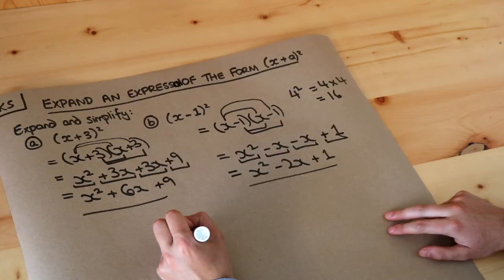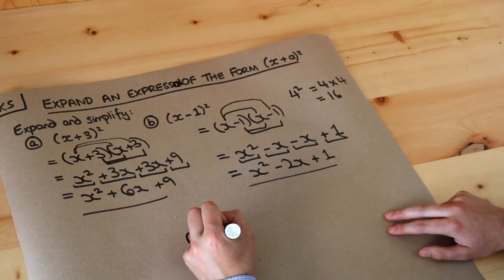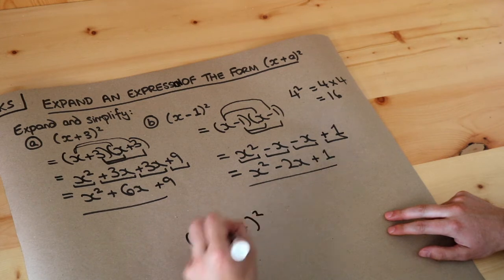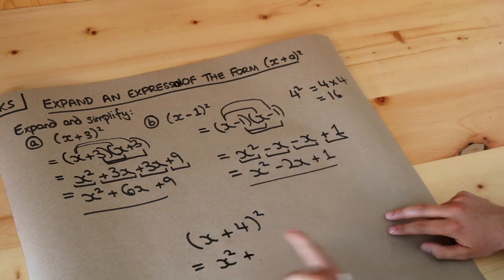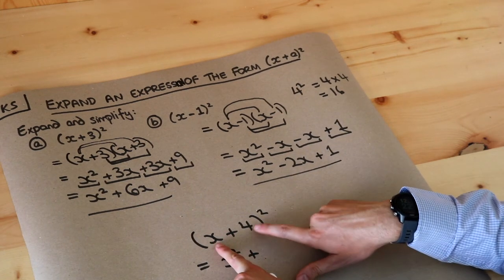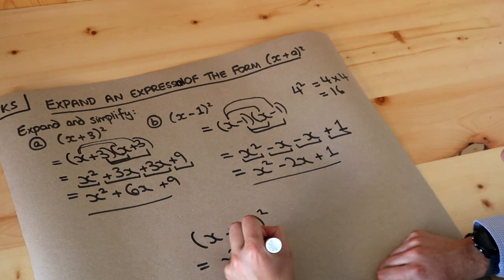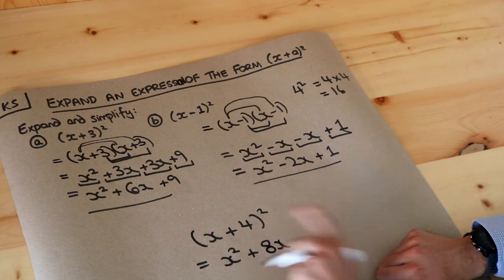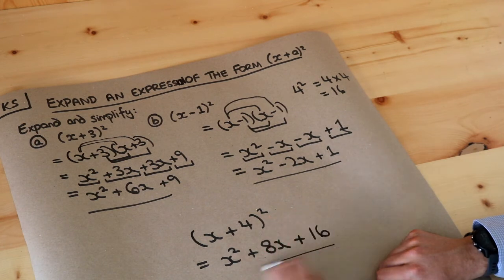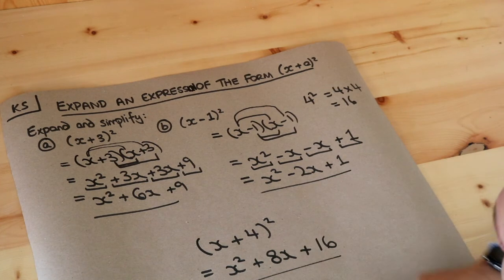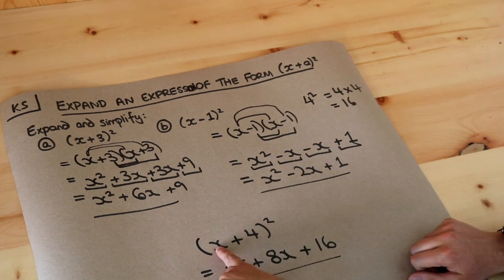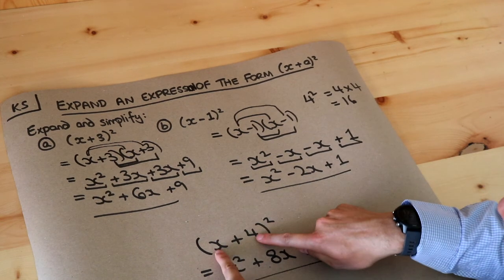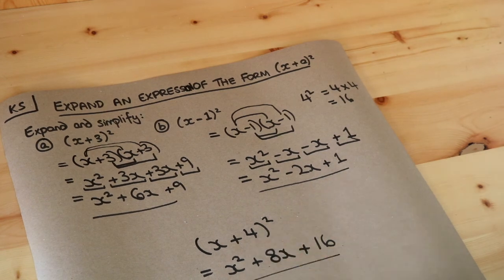If you want to do this quickly — say (x + 4) squared — you do the first term squared giving x squared, then you multiply the two terms together and double it: x times 4 is 4x, doubled is 8x, and then you do the second term squared: 4 squared is 16. So the answer is x² + 8x + 16. That's a nice shortcut: first thing squared, multiply the two terms together and double it, then second thing squared.